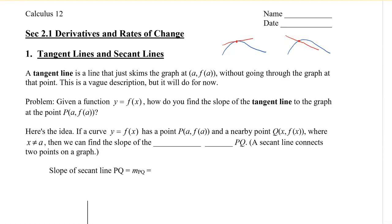So the problem that we're dealing with is: if we are given a function y equals f of x, how do we find the slope of the tangent line to the graph at that one point?